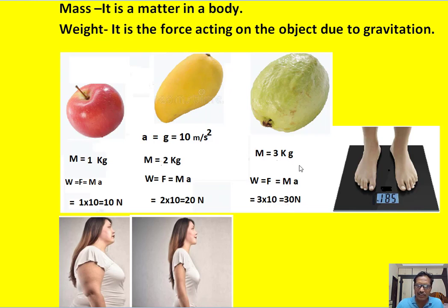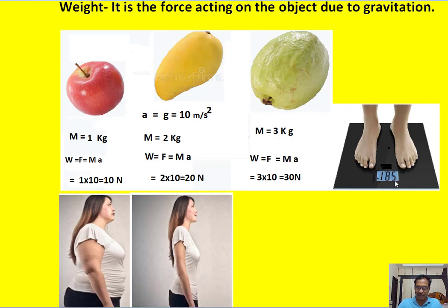So all these units we discussed are nothing but absolute units. Now we know the weighing machine on which we see our weight. What is the meaning of this? So this is the weighing machine.